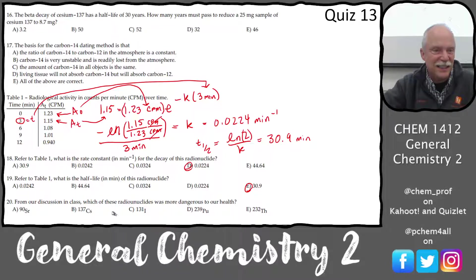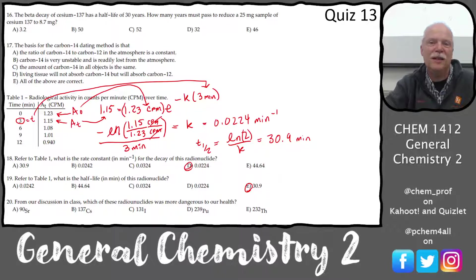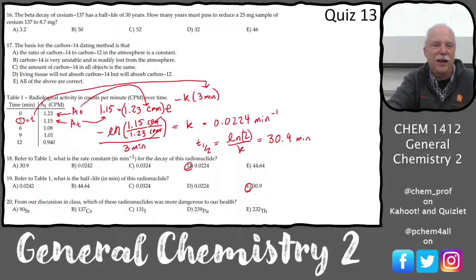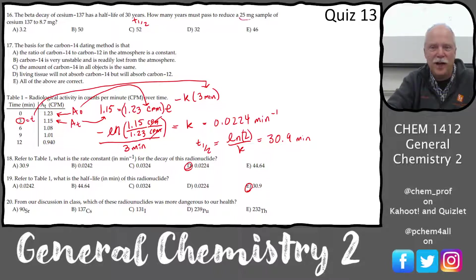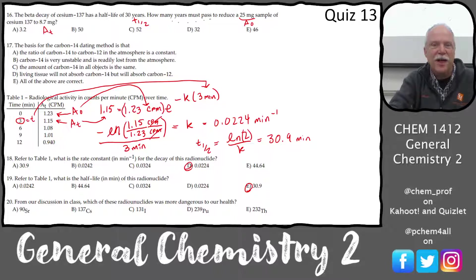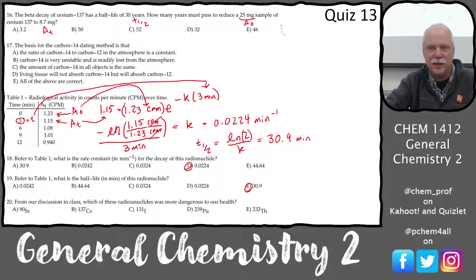Question 16 is asking for the time. We have the half-life, so that's T½ up here. We have a 25-milligram sample, so that's A₀. It's going to 8.7 milligrams, so that's A(T). We have everything but the time — this is going to be another algebra exercise.